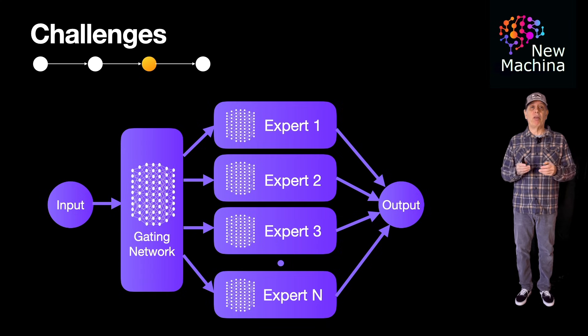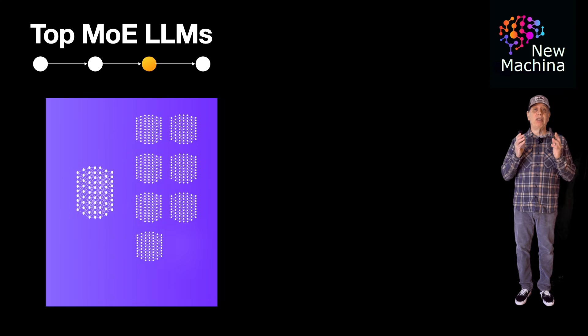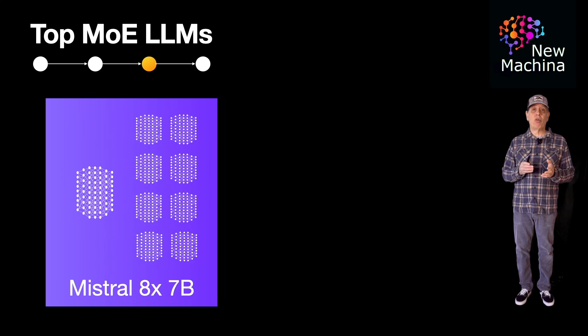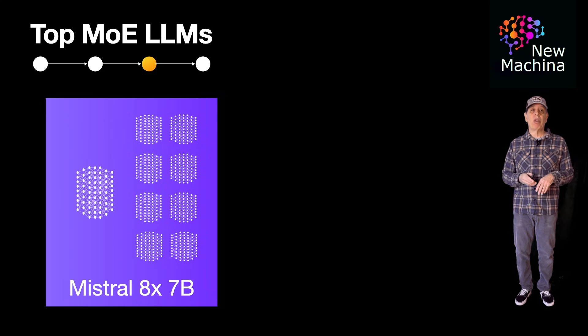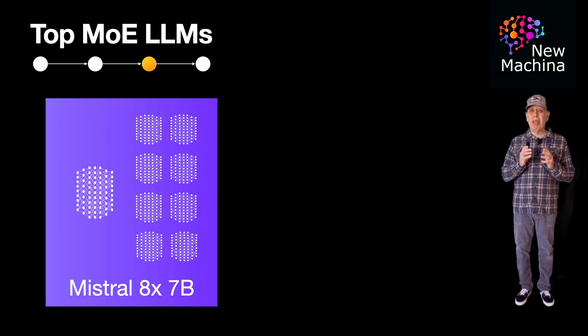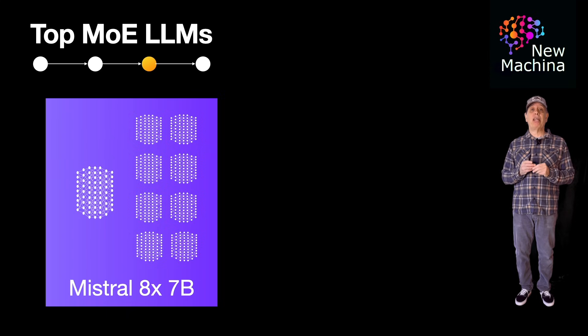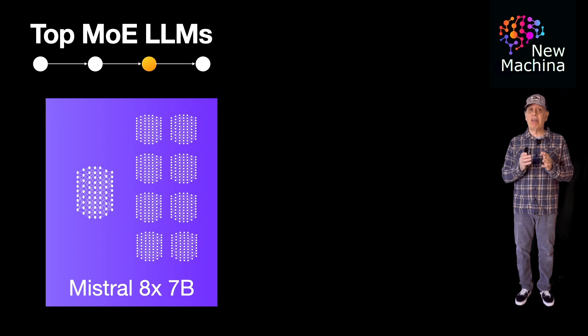So are there MoE models in the wild? The answer is yes. One popular MoE model is Mixtral by Mistral AI, a French startup. Launched December 2023, Mixtral 8x7B is an open-source MoE language model with 46.7 billion parameters, utilizing eight experts with a sparsity of two. This means that two of the eight experts are activated at any given time during inference. It outperforms models like GPT-3.5 and Llama 2 70B on various benchmarks.